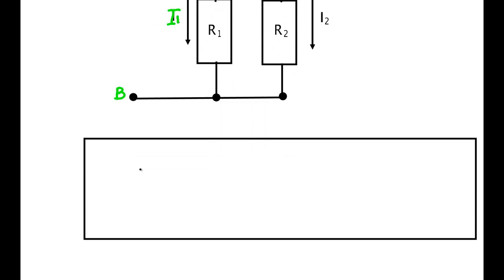The amount that goes to resistor one is equal to the total current that comes in times the other resistor R2 divided by the sum of the resistors. So again, very easy to use.